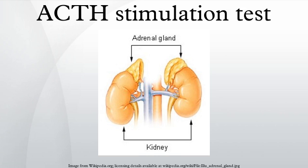It is proper to continue with the diagnosis of secondary adrenal insufficiency. If secondary adrenal insufficiency is diagnosed, the insulin tolerance test or the CRH stimulation test can be used to distinguish between a hypothalamic and pituitary cause, but is rarely used in clinical practice.